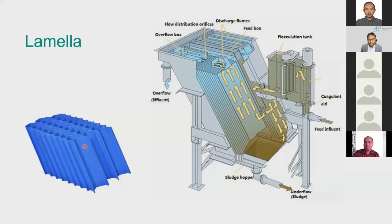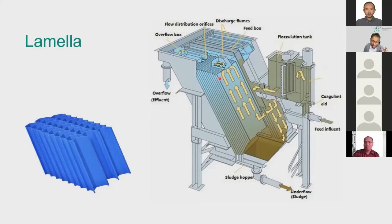Commercial systems such as the Super Pulsator from Suez use tube flocculators and lamella-type plates. While lamella systems have many advantages — reducing sedimentation tank volume and area by 2 to 5 times — there is a disadvantage: cleaning is difficult when plates are spaced only 10 cm apart over a height of 1–2 meters, compared to a standard open tank where anyone can enter and clean it.